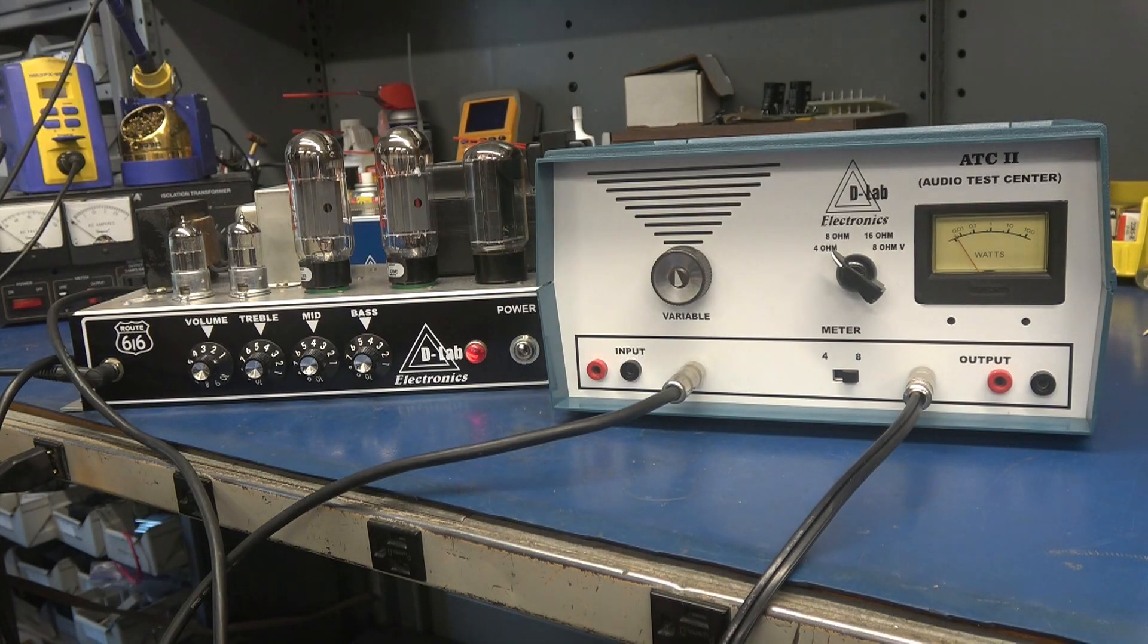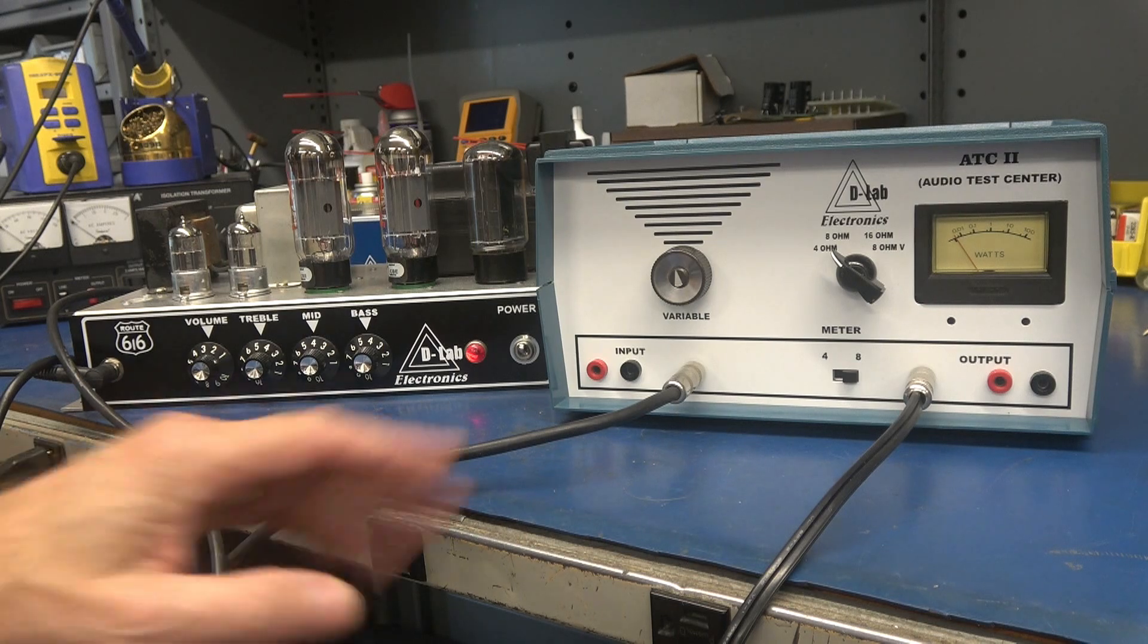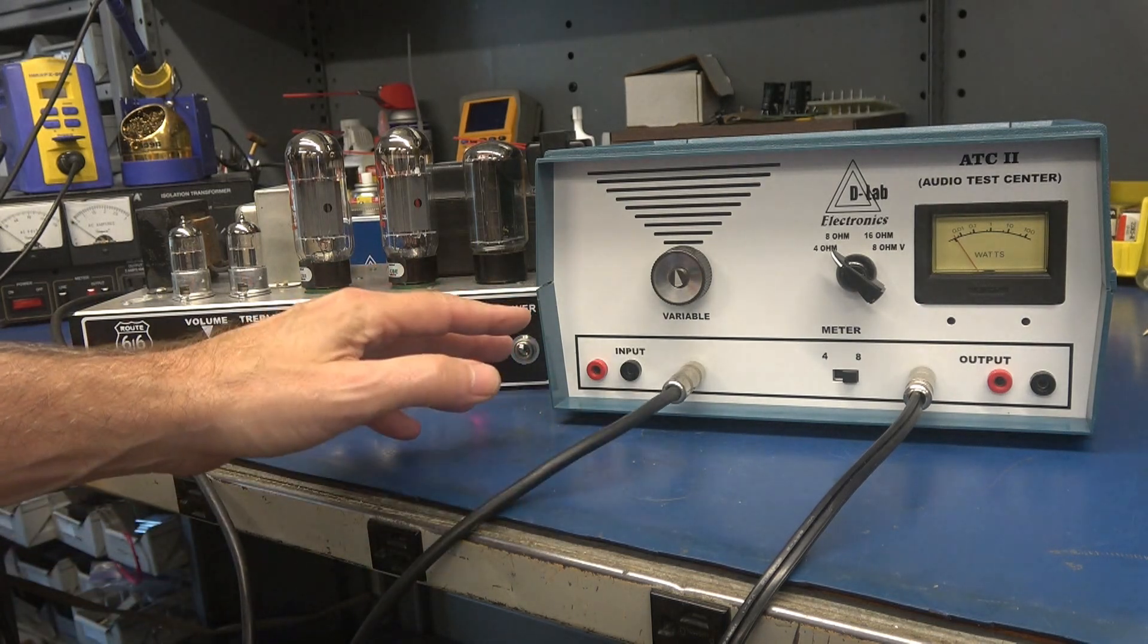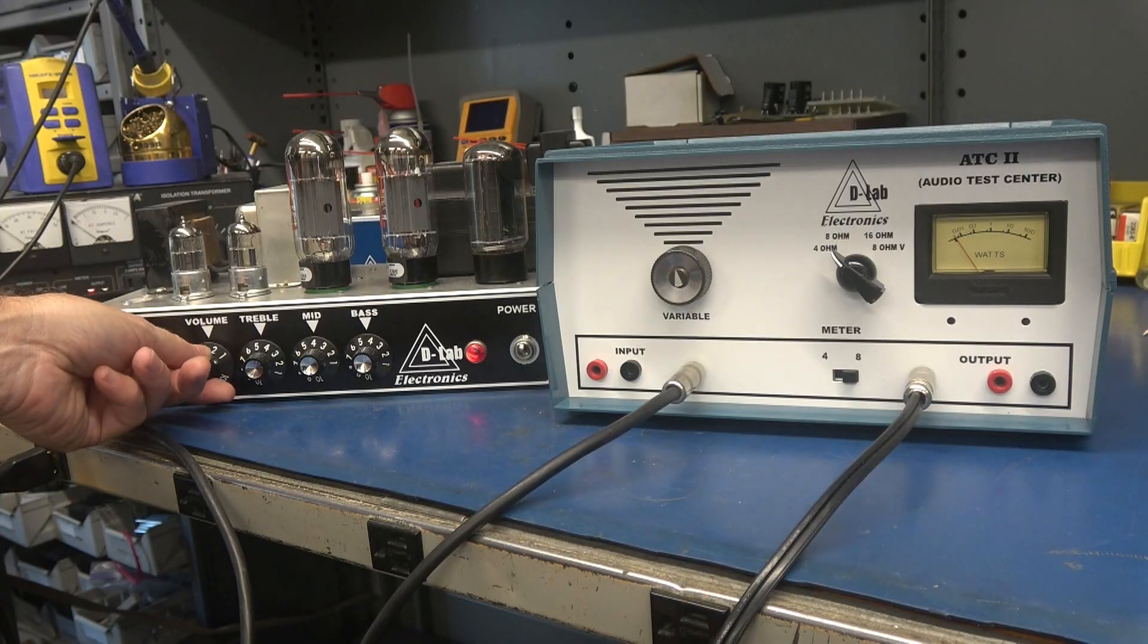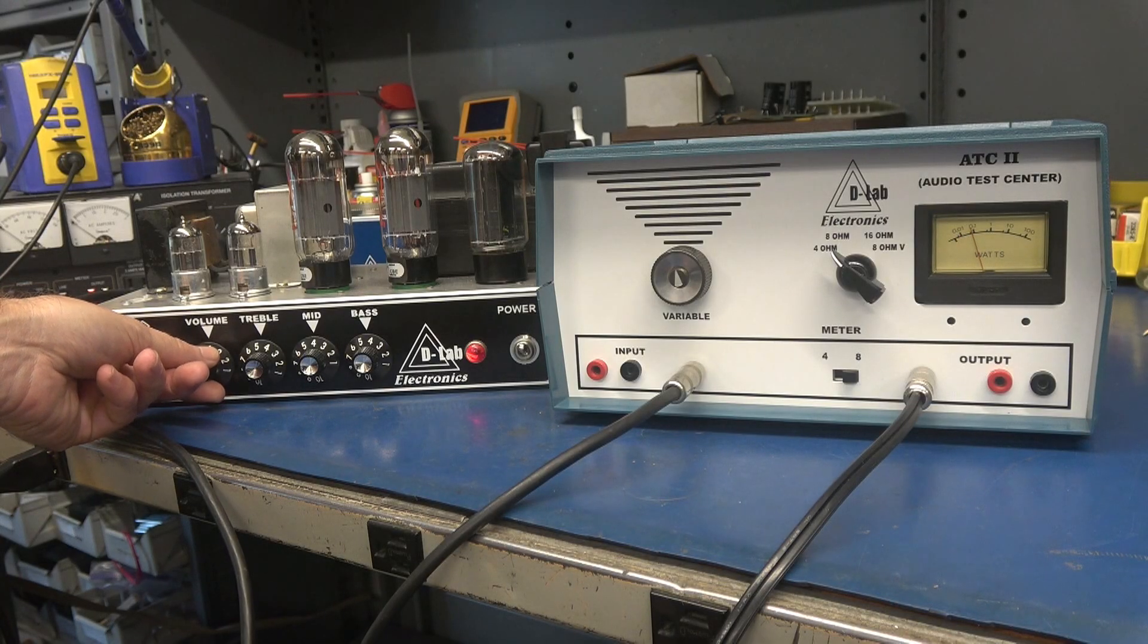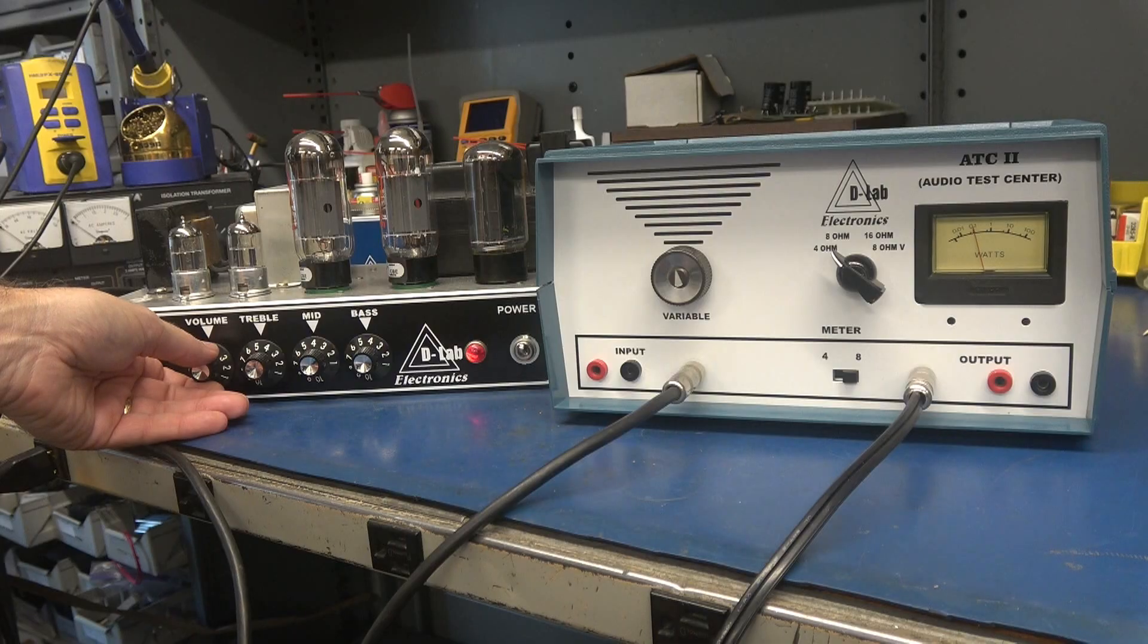So here's a quick demonstration. We're going to use one of my amplifiers. We're going to drive the ATC. This is the input to the dummy load. This is the output going to an external speaker. So right now I'll turn up the volume and you will see the watt meter dancing around to the music.